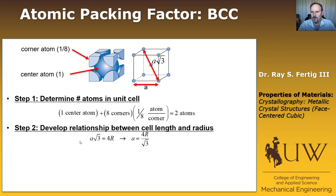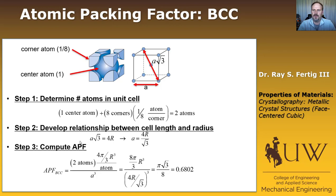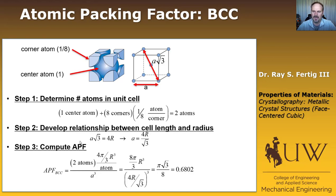Now we compute the atomic packing factor, which is the volume of atoms in the unit cell divided by the volume of the unit cell. We have two atoms times their volume of (4/3)πR³ per atom, divided by A³. Making our substitutions, we find that the atomic packing factor is 0.6802 for BCC. Doing a gut check, we compare that to 0.74 for FCC and HCP, and we see it's slightly less — which is exactly what we expected, since BCC is not quite as closely packed.